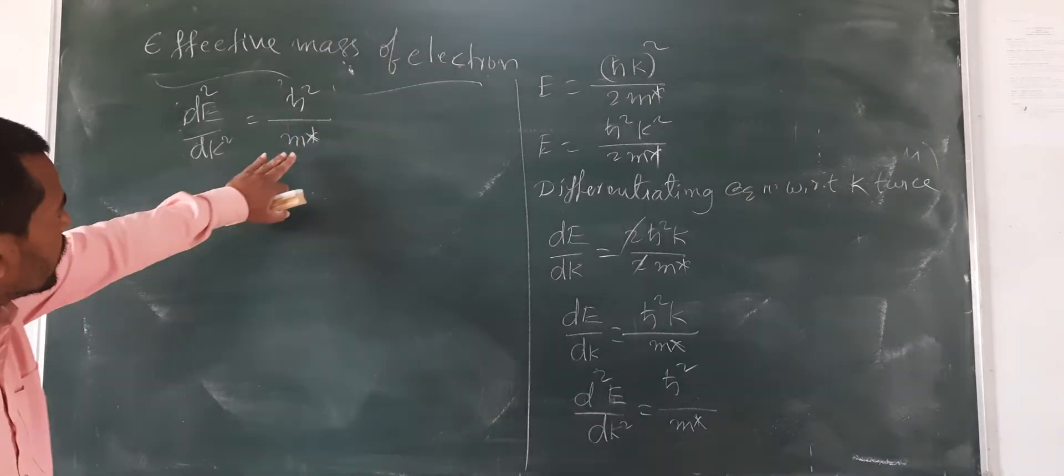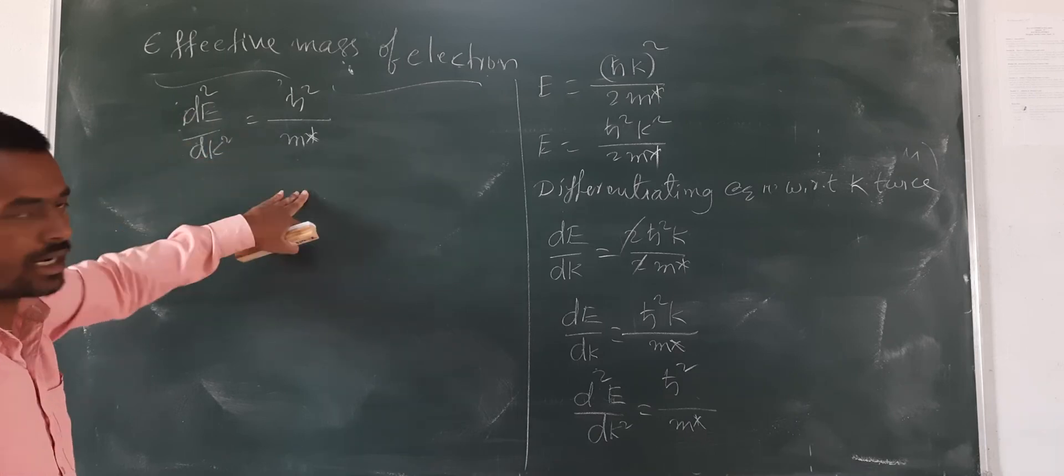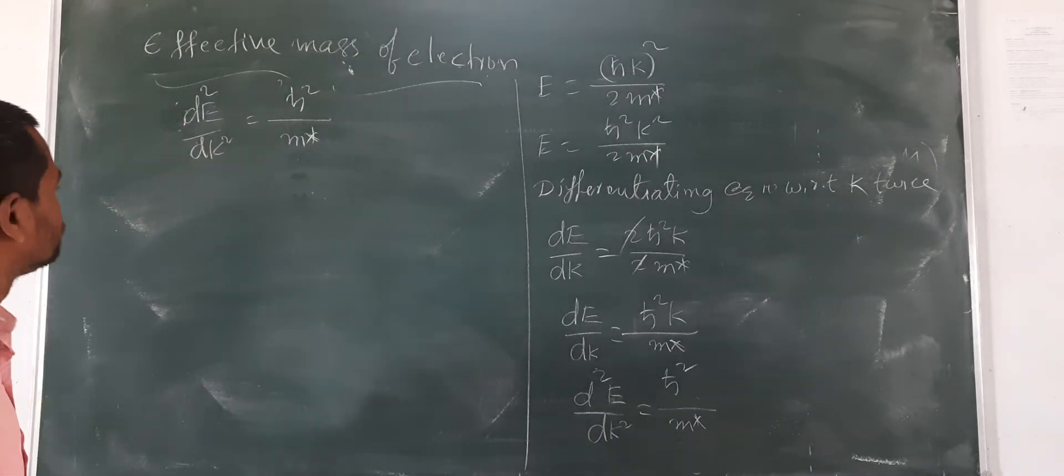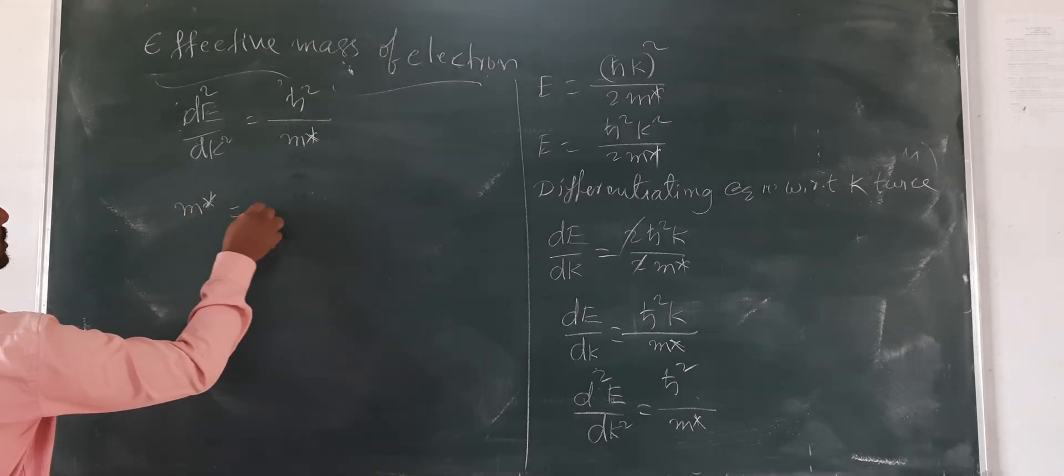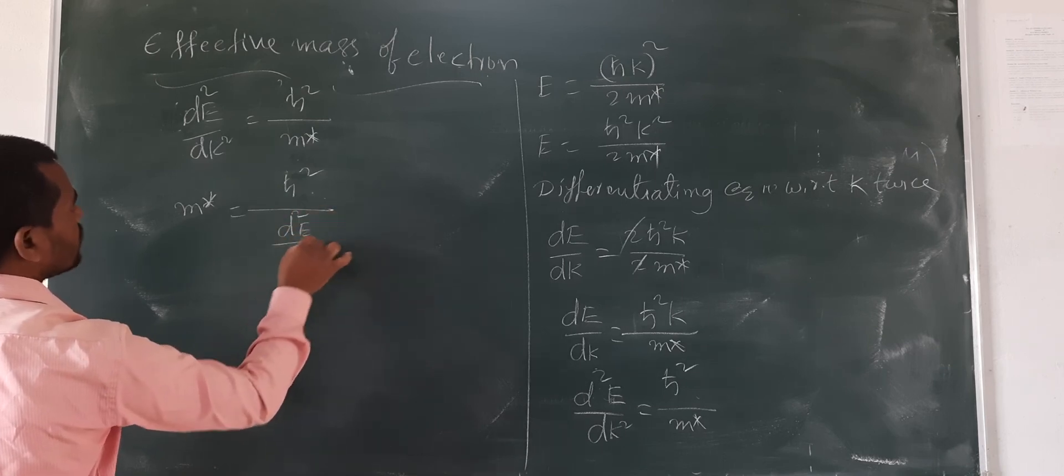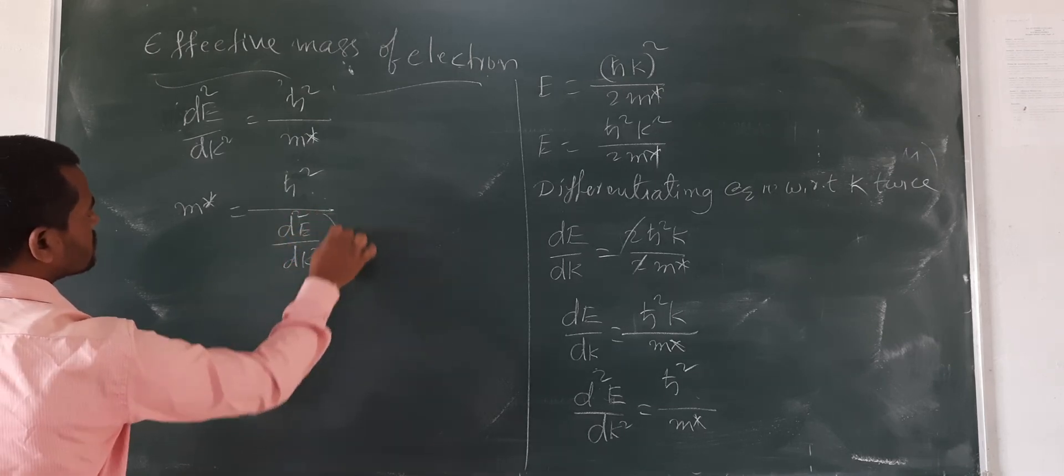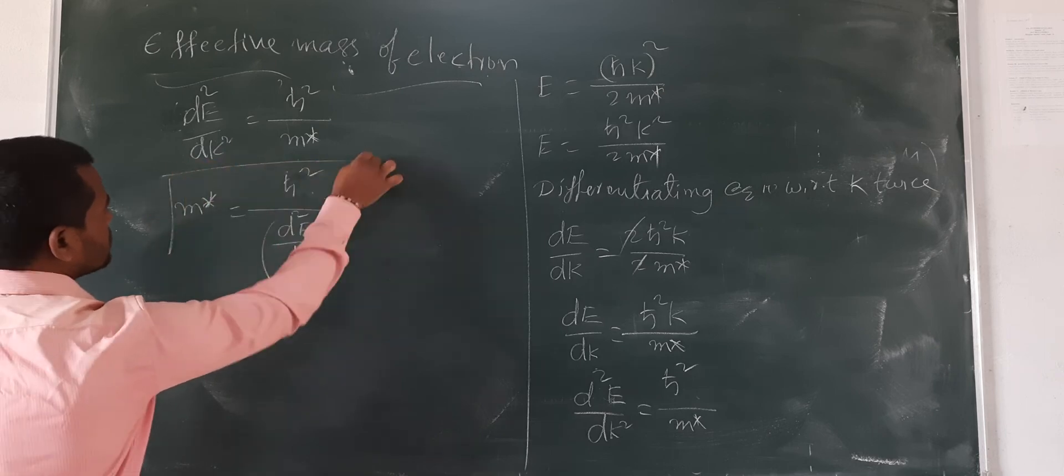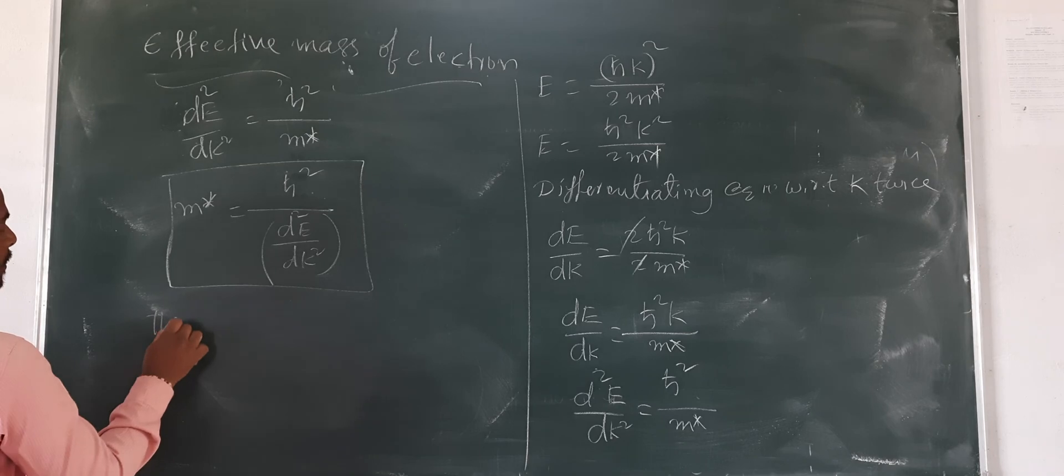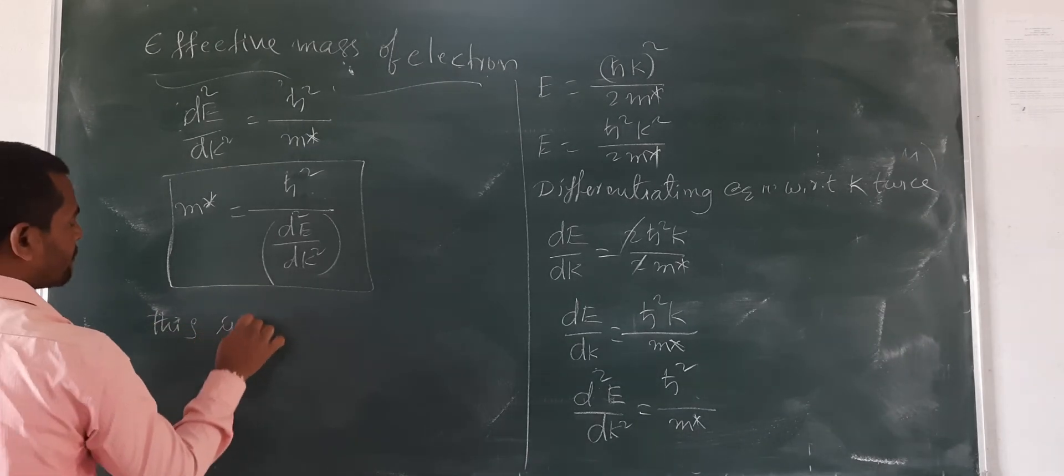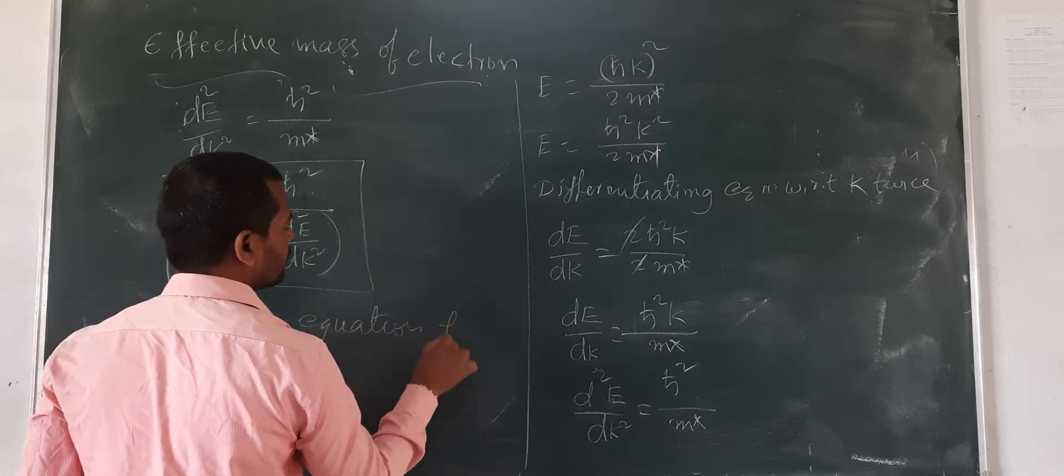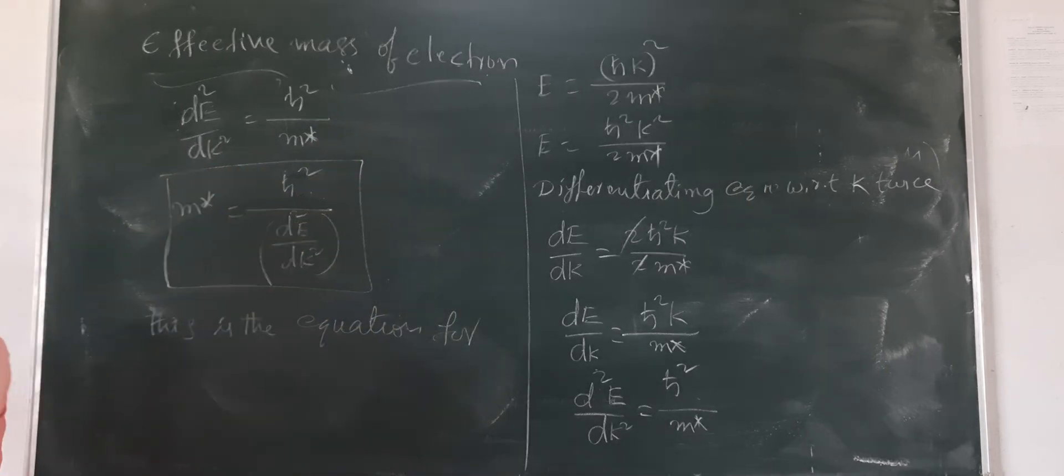Now, bring m star this side and this totally to the other side. So this comes upside and this comes downside. M star equals h-cut squared by d squared E by dk squared. So this is the equation for effective mass of electron.